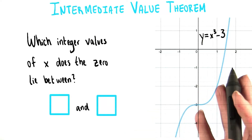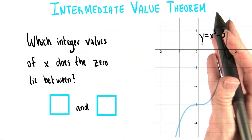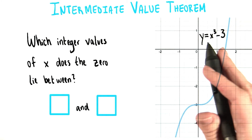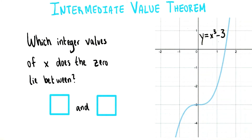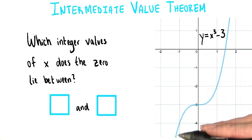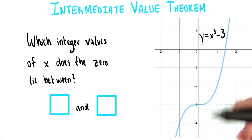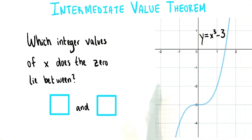Let's pick a polynomial function to play with so that we can see how the intermediate value theorem actually works. I've chosen y equals x cubed minus 3. Its graph, pretty zoomed in, looks like this. Notice the labels on our y-axis and on our x-axis.